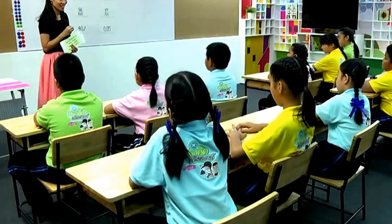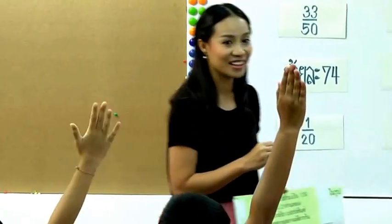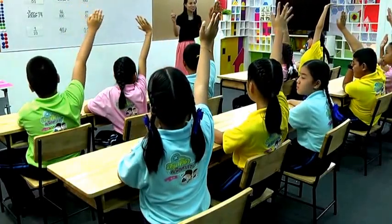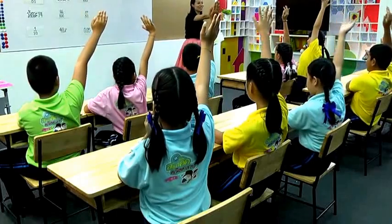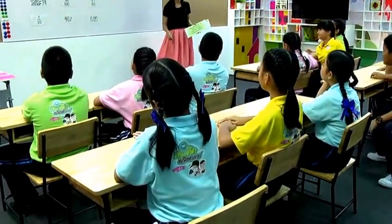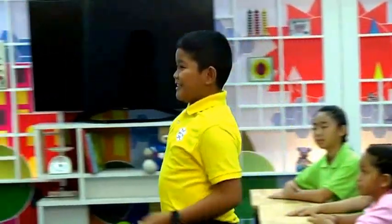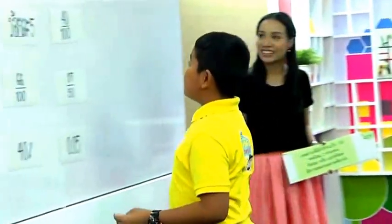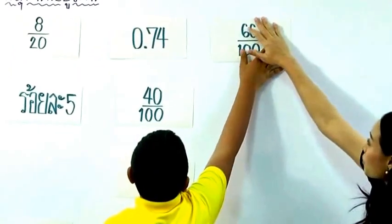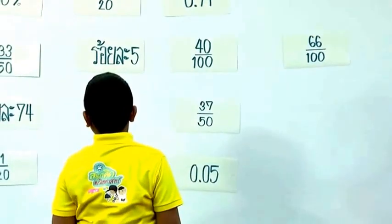Do you understand? Do you think you can see the next step? I've seen the next step. Do you see it? I can see it myself. This step is 66, and this step is 100. Let's look at what's in the next step.